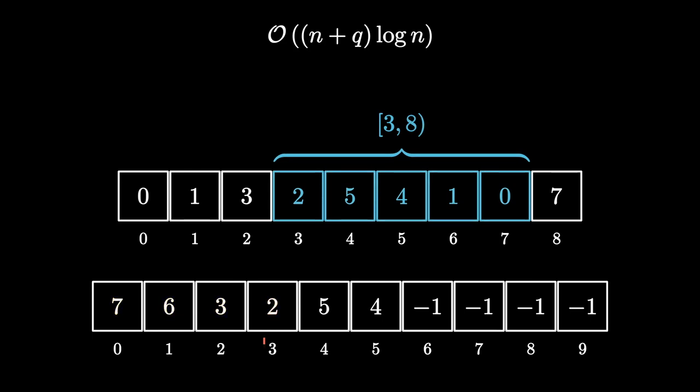After we've answered all the queries for position i, we need to update that the number ai occurs at the position i and move on. Obviously, this will work in O(n plus q log n). Note that this solution is offline because we need to know all the queries in advance. However, as with any other scanline segment tree solution, we can make it online. To do this, we just need to use a persistent segment tree.